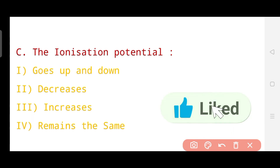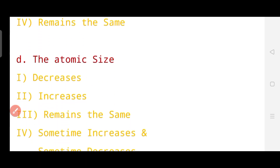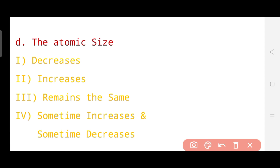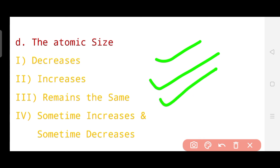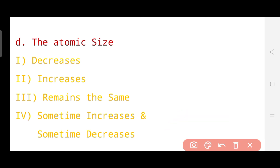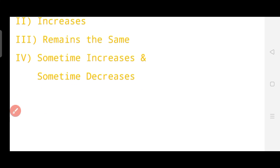These are a few basic questions from the periodic table and I will be bringing more such questions — this is just the beginning of this chapter. Question number d is about atomic size. Whether the atomic size decreases, increases, remains the same, or sometimes increases and sometimes decreases when moving across a period. The correct answer is that atomic size decreases. So atomic size decreases when we move across a period.